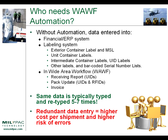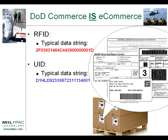When we first start talking with a DOD supplier about WAF automation and look at their current process, we typically see that the same data is entered and re-entered many times. The same shipment data could be entered into a financial, ERP, order management, or billing system; entered again into labeling systems; re-entered within labeling systems for unit container labels, then again for exterior container labels, and again for military shipment labels. Then the data is entered again into Wide Area Workflow. Normally we see the same data typed and retyped by one person or multiple people up to five to seven times — resulting in higher cost per shipment, higher risk of errors, and tedious work.